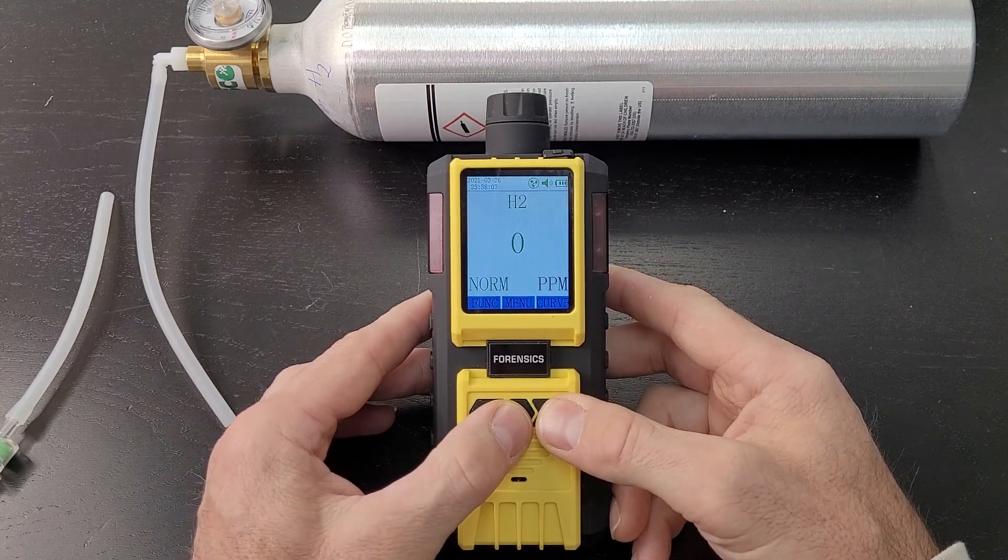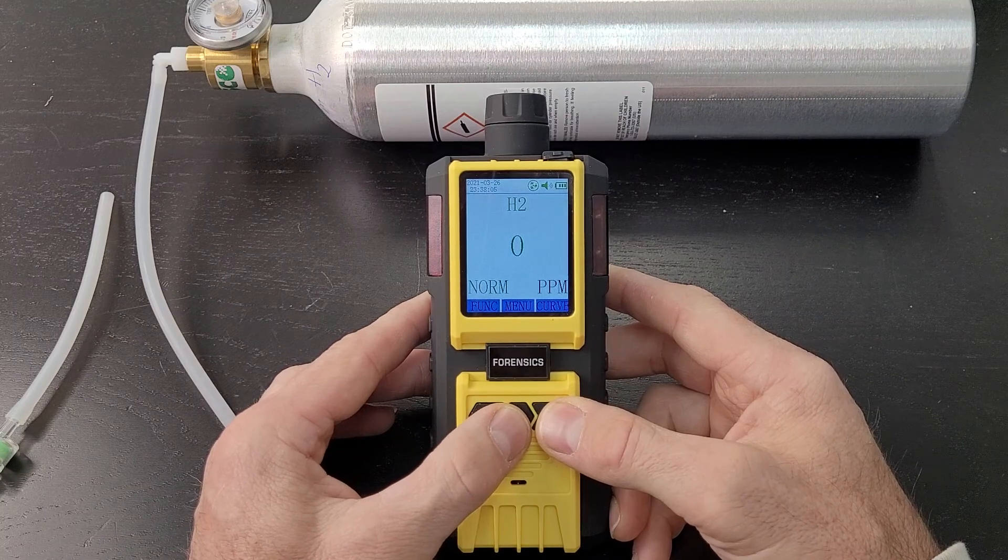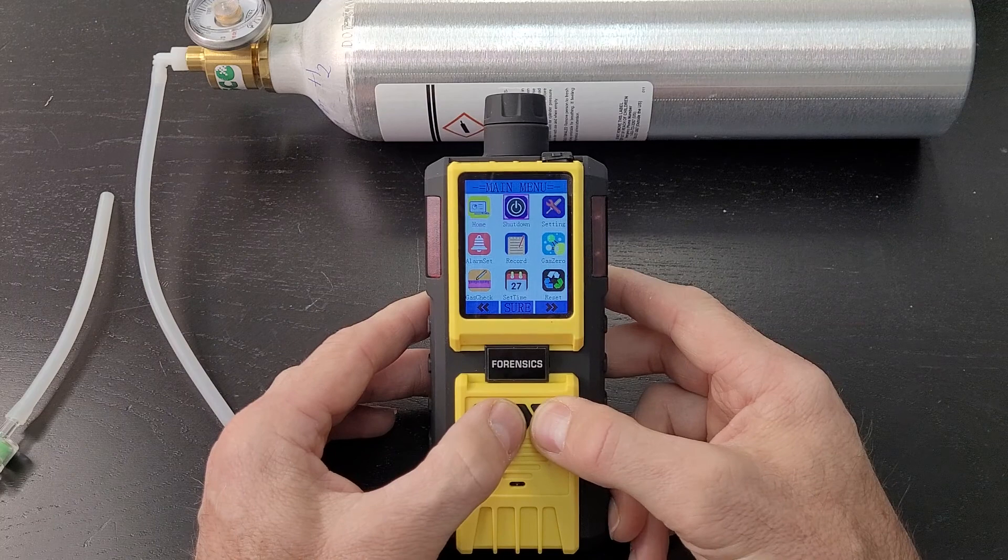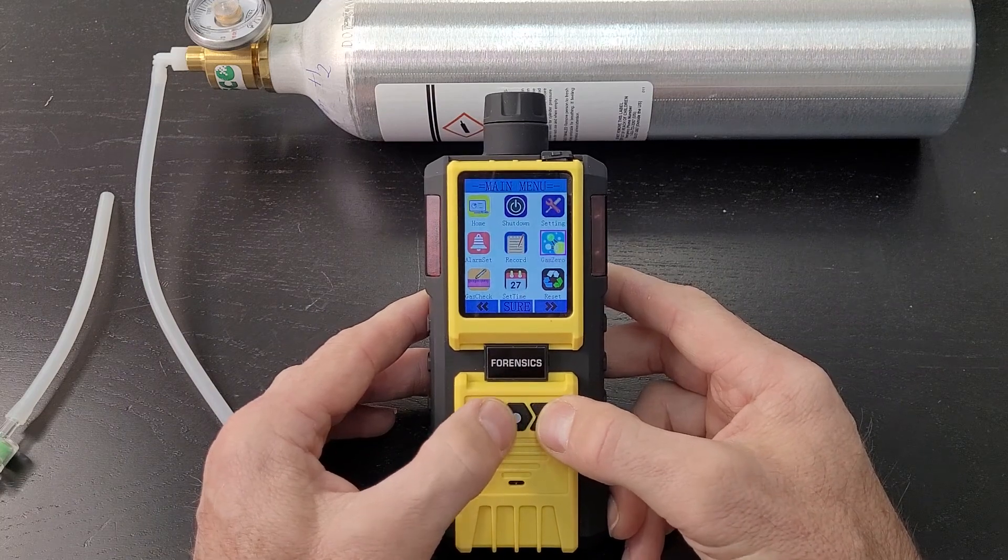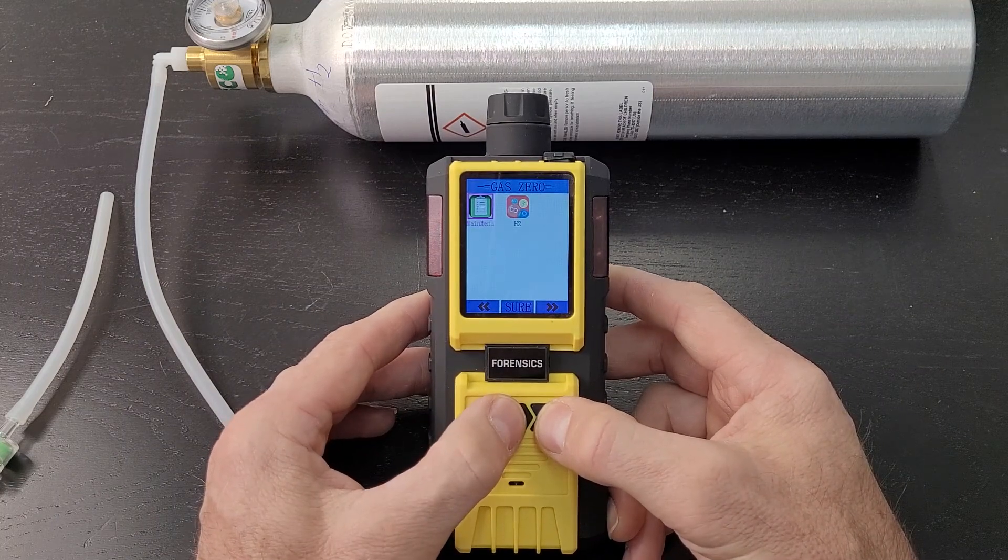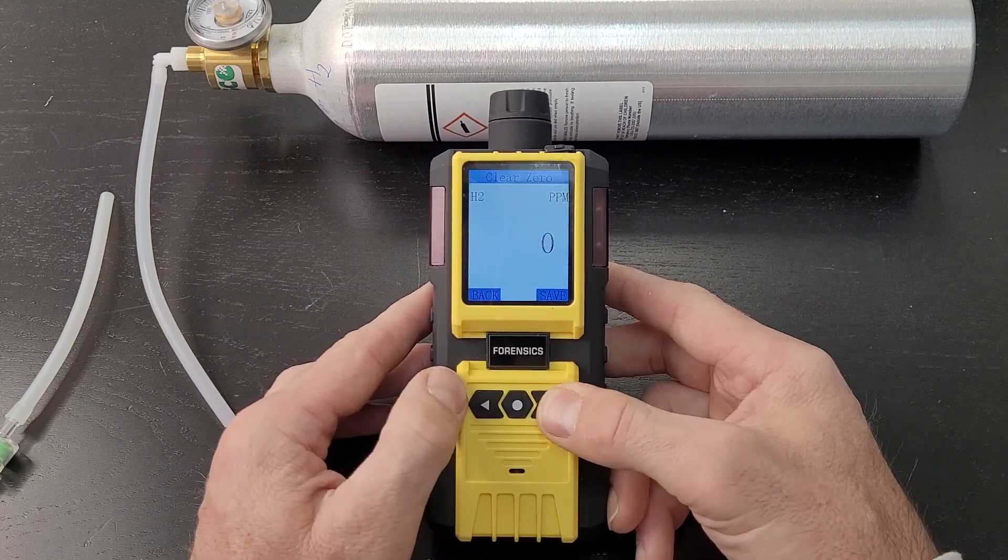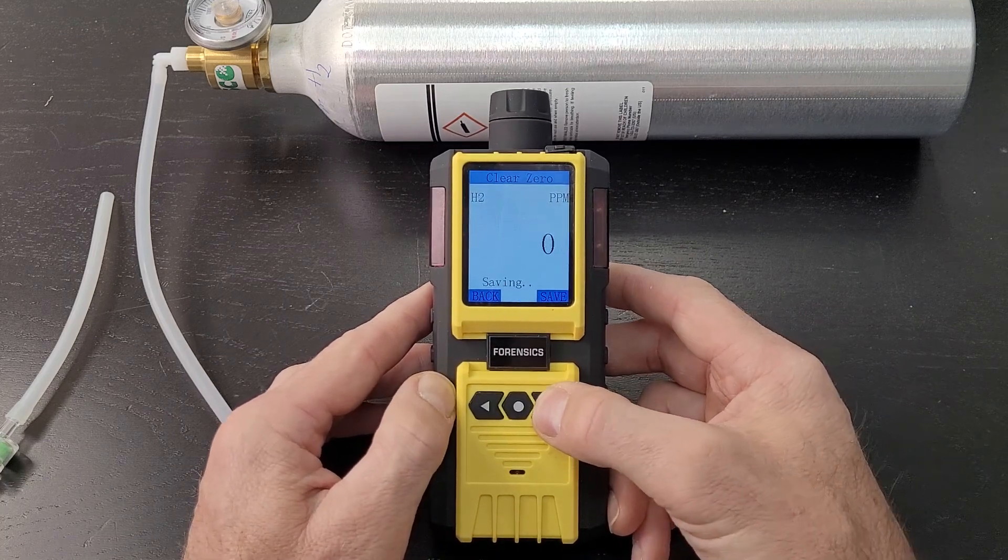Make sure it's fresh air. If you're not sure, just take it outside in the fresh ambient environment. Go to menu, click through, go to gas zero, click H2. We're selecting the sensor that's in the meter. Click save - you've done it, easy as that.